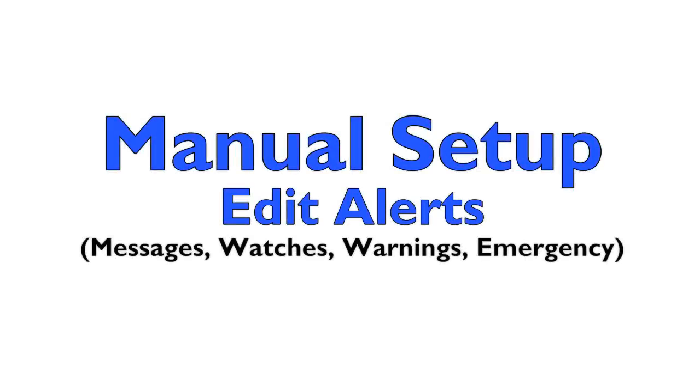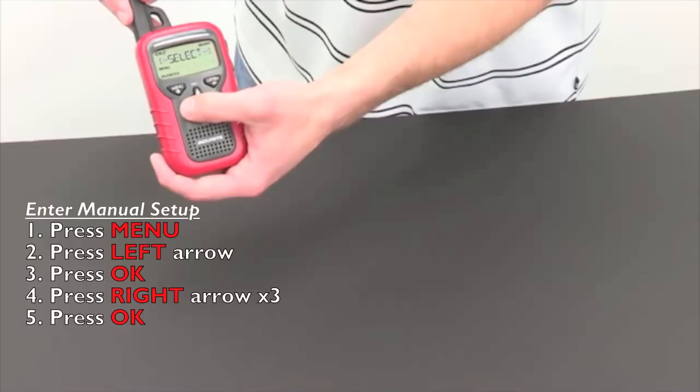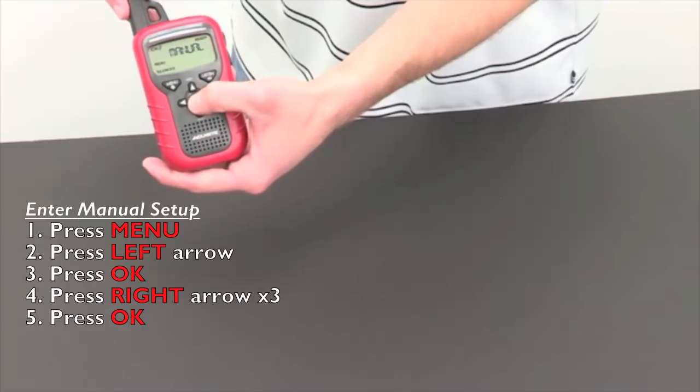Your NOAA radio is automatically set up to sound a siren for all warnings. However, you may also set up additional alerts. Press menu. Press the left arrow. Then press ok.